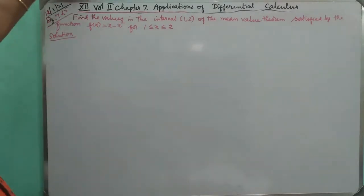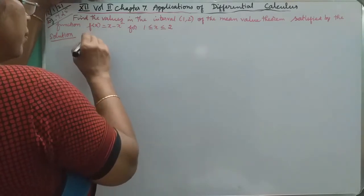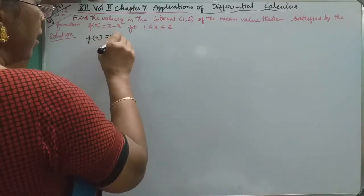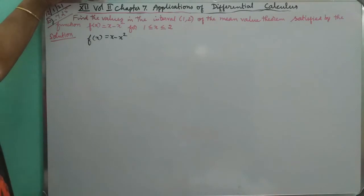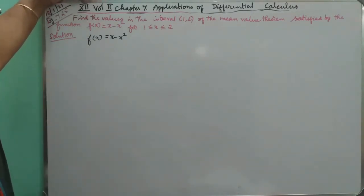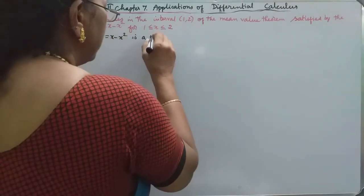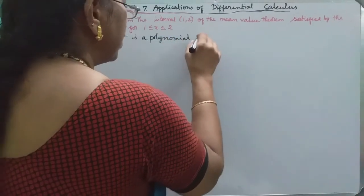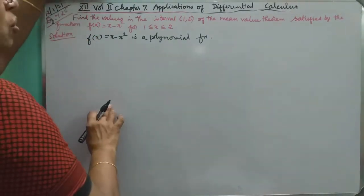Now we check this out. If you look at f of x, what is f of x? So, f of x is equal to x minus x square. What do you see? This is a polynomial — this is a polynomial function.